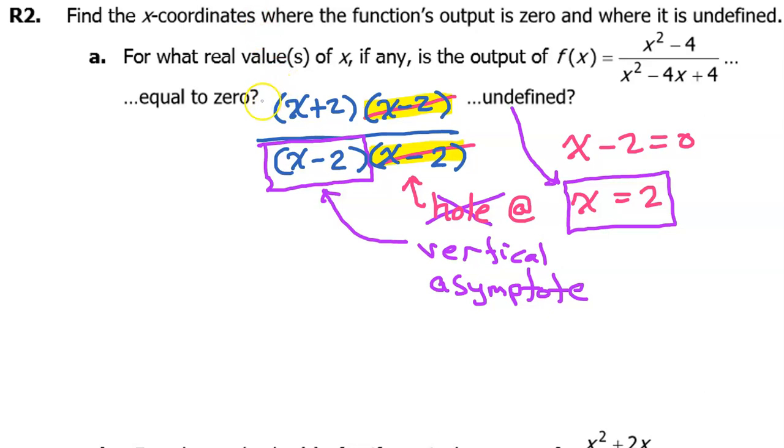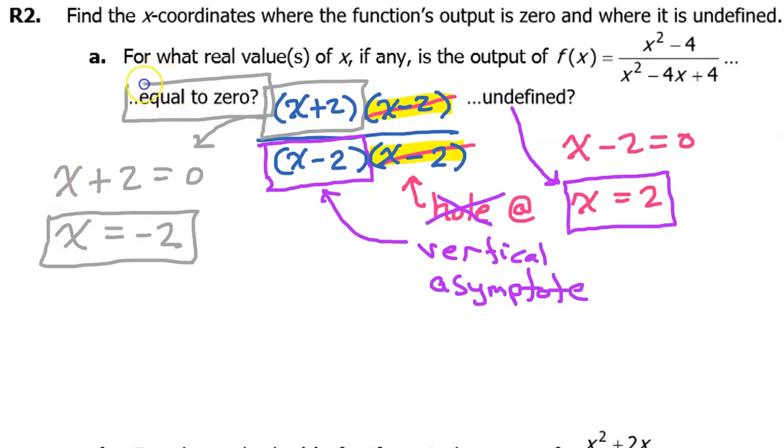That's going to come from the numerator. If you want to know where the function is equal to 0, you're going to set the numerator equal to 0. So we get x equals negative 2. So the function is equal to 0 at x equals negative 2, and the function is undefined at x equals positive 2.